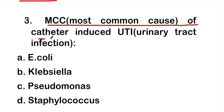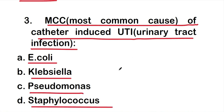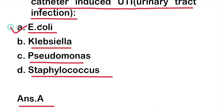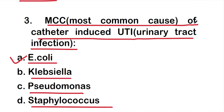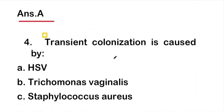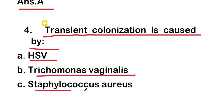Question 3: What is the most common cause (MCC) of catheter-induced UTI (urinary tract infection)? The options are E. coli, Klebsiella, Pseudomonas, or Staphylococcus aureus. The right answer is option A: E. coli. E. coli is the most common cause of catheter-induced urinary tract infection.